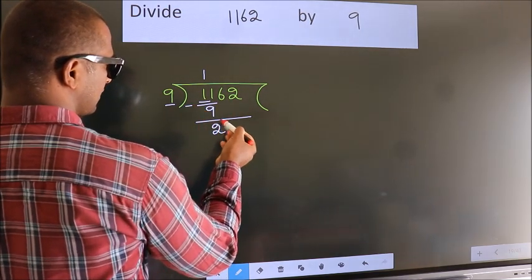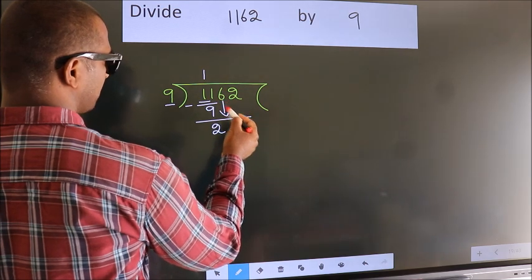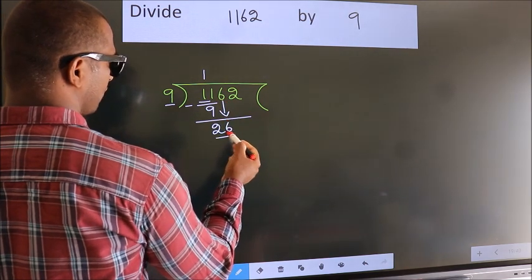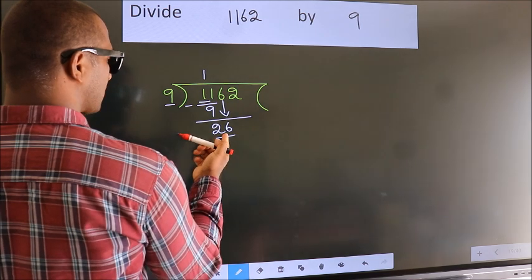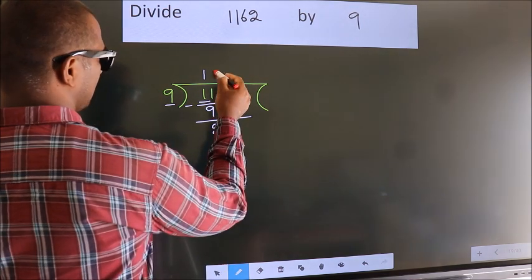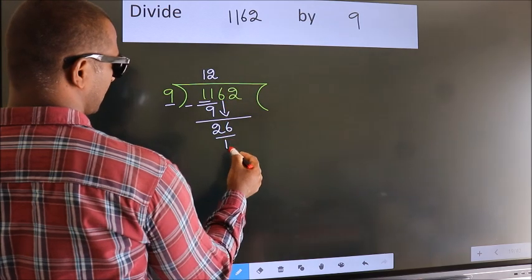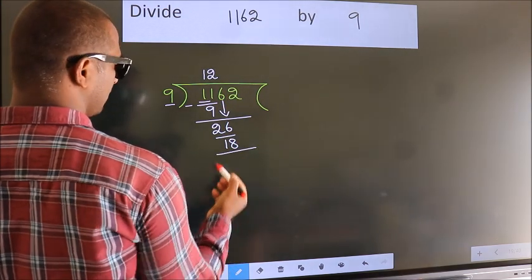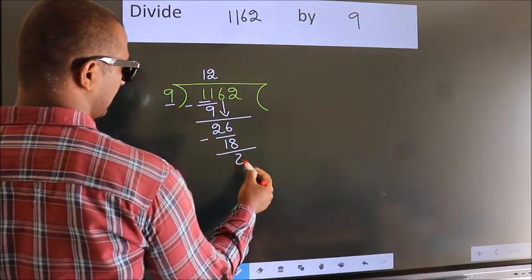After this, bring down the beside number. So 6 down, making 26. A number close to 26 in the 9 table is 9 times 2 equals 18. Now we subtract. We get 8.